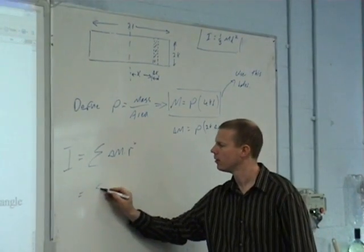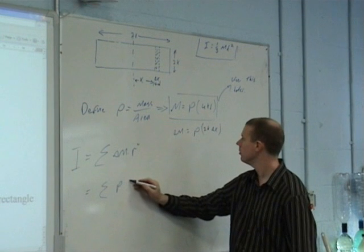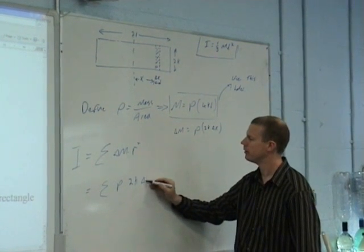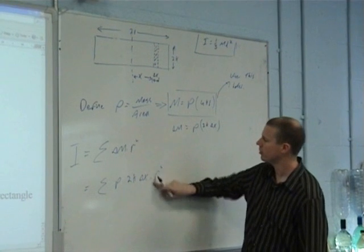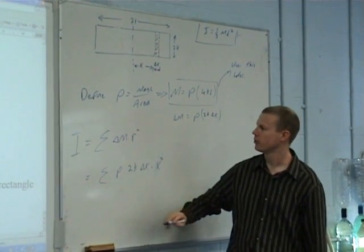That goes to sigma rho 2K delta X R squared. My delta M I take from here, so it's rho 2K delta X times R squared. My R squared becomes what? X squared.